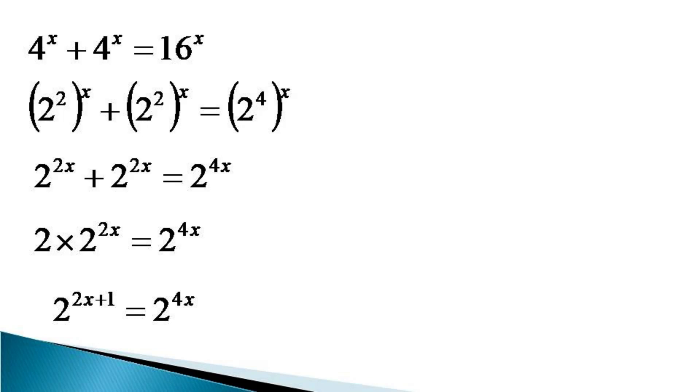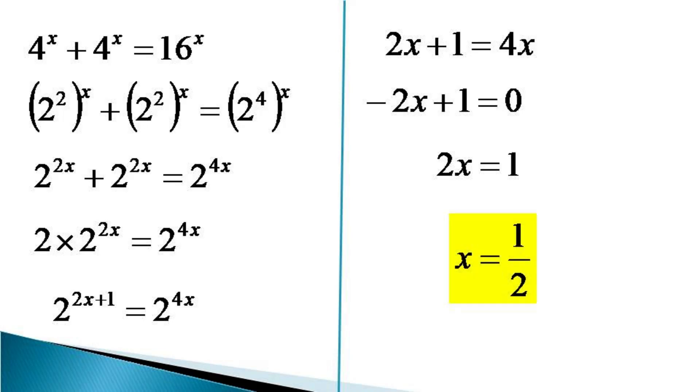This equals 2^(4x). Since the bases are equal, the indices must be equal, so 2x + 1 = 4x. Bringing 4x to the left side gives -2x + 1 = 0, which becomes 2x = 1, giving x = 1/2.